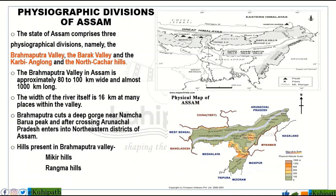River islands are the most important feature in this area. A notable island has been formed in this region. The Brahmaputra channel shifts southward due to tectonic events, and this channel is part of the Brahmaputra River at Majuli island.